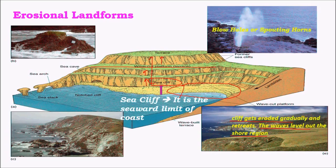Blowholes or spouting horns are another important landform found where beaches are rocky. Due to holes in the rock-like structure, the pressure exerted by sea waves is released as small explosions in these blowholes.